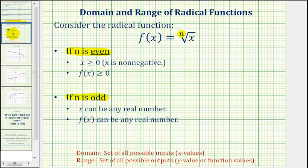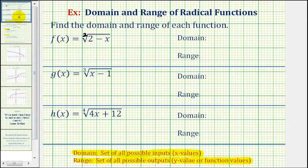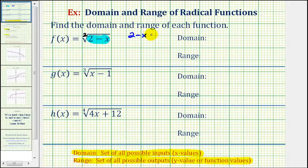So going back to our three examples, since f of x is equal to the principal square root of two minus x, the radicand, two minus x, must be greater than or equal to zero. So if we set this up as an inequality, we would have two minus x must be greater than or equal to zero. And now we can solve for x to determine the domain of the function.